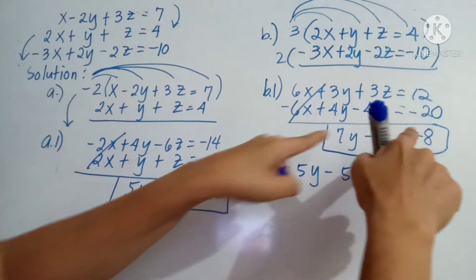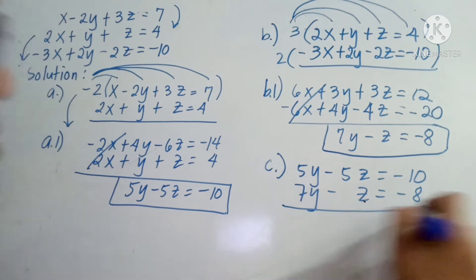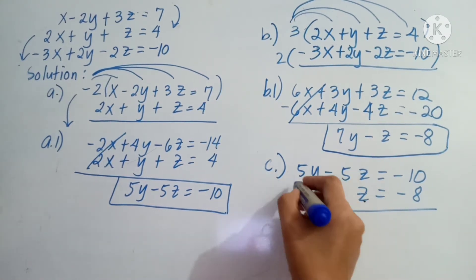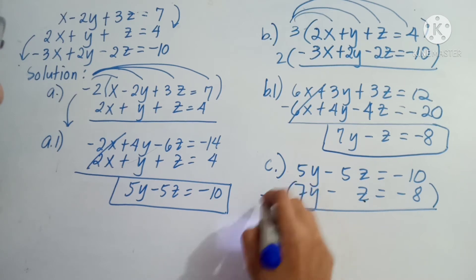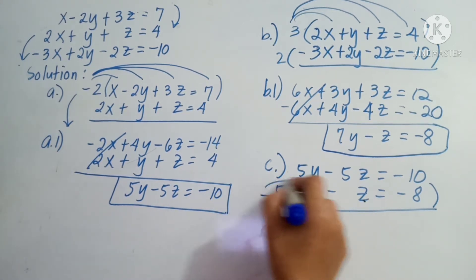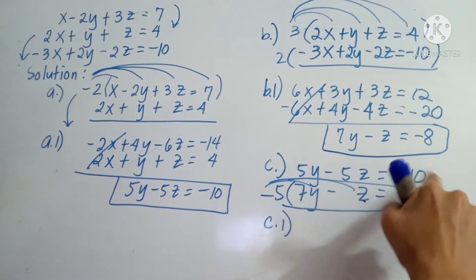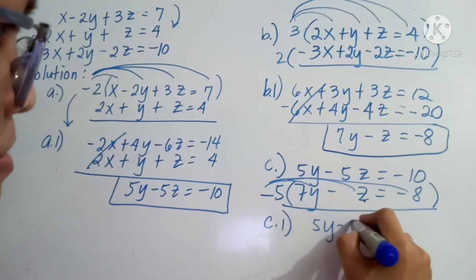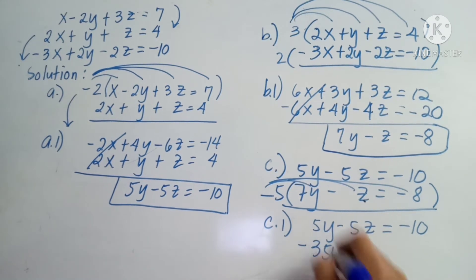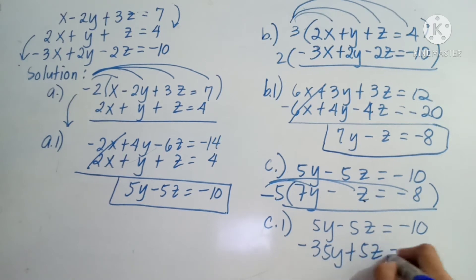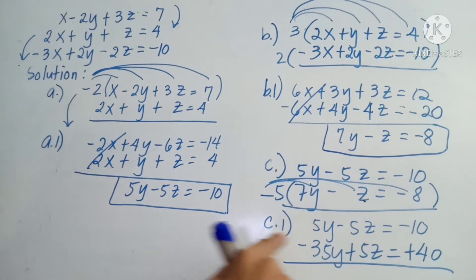Sa dalawang variables that are y and z, yung i-eliminate x and z. Dinistribute ko na yung negative 5 doon sa pangalawang bagong equation para ma-eliminate na si Z. At maya-maya lang, lalabas na ang value ni Y.